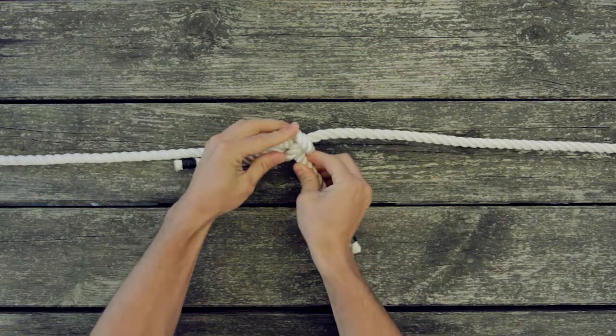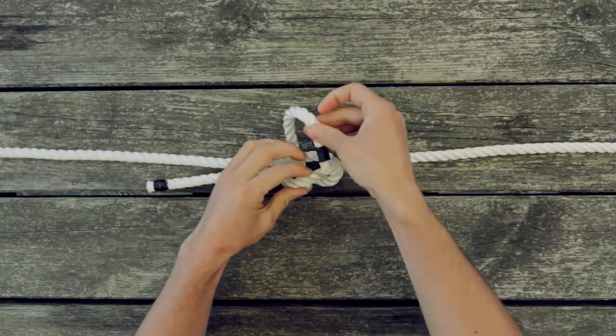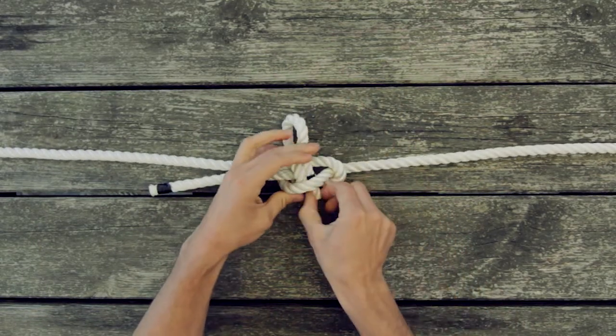To make it a double sheet bend just repeat the last step by passing the working end underneath again back around through itself and tighten.